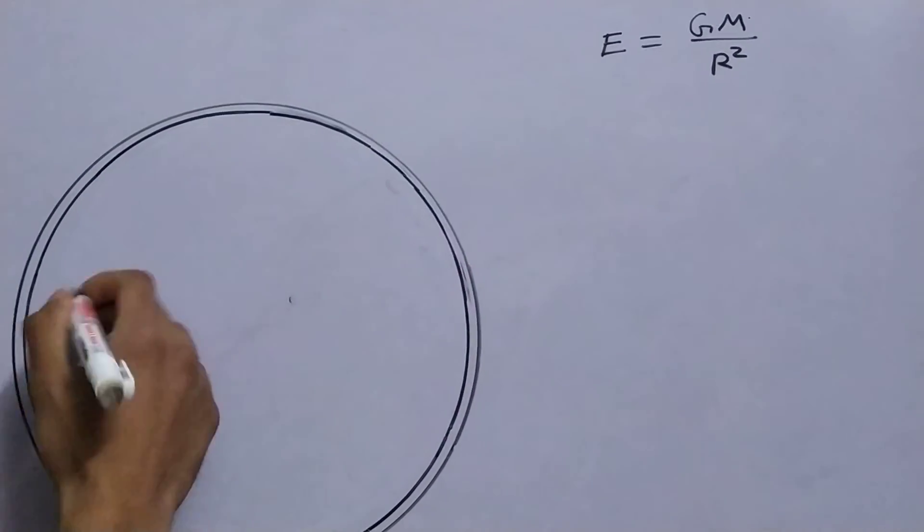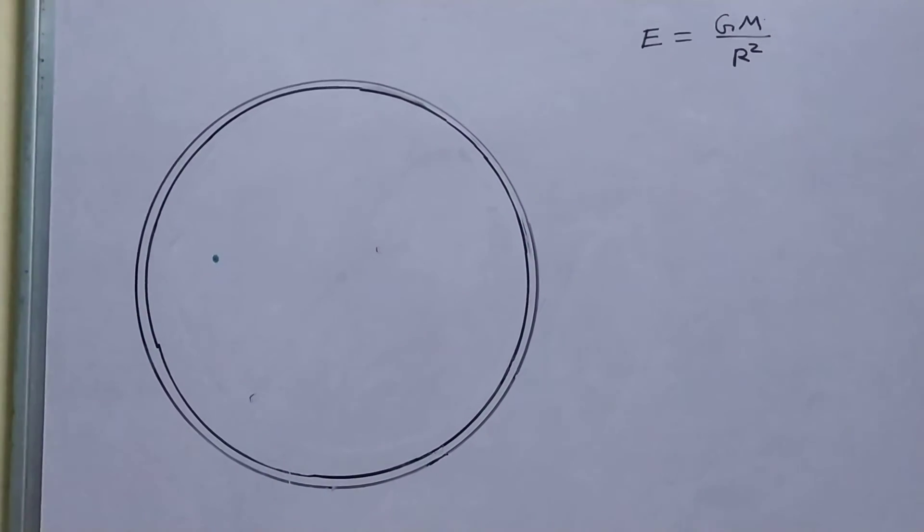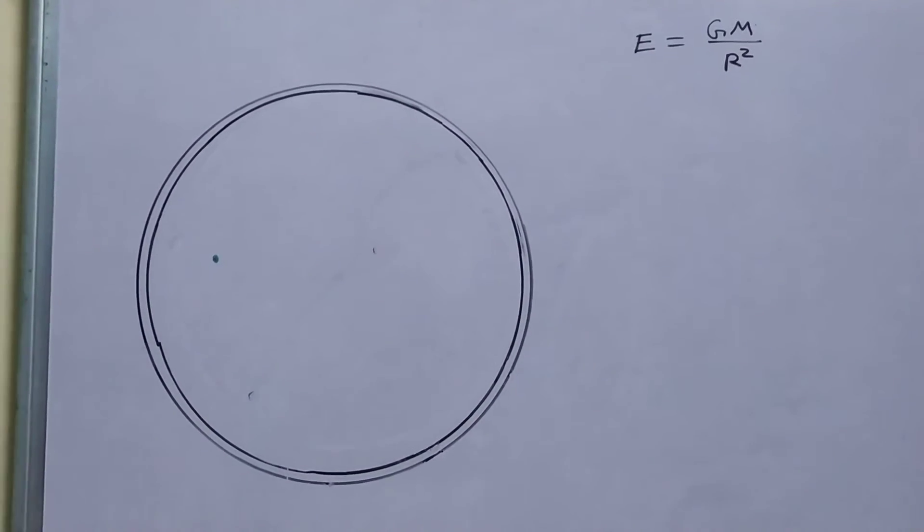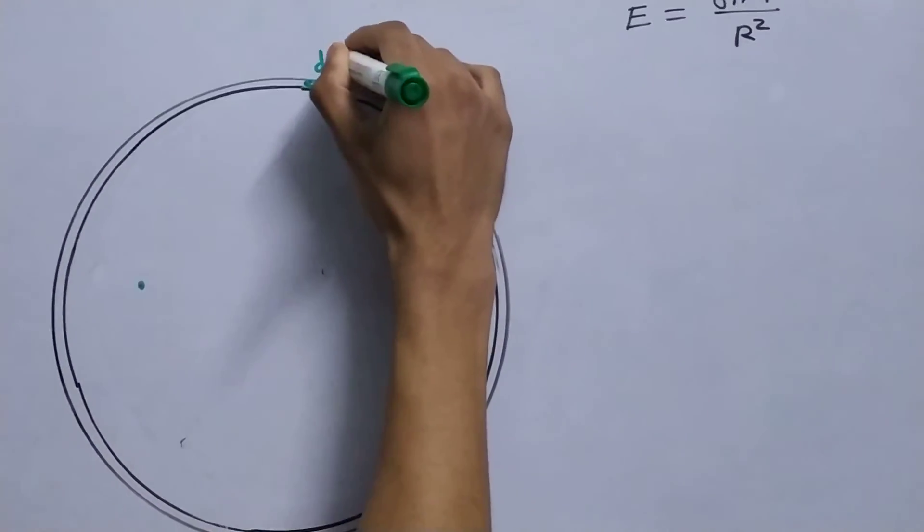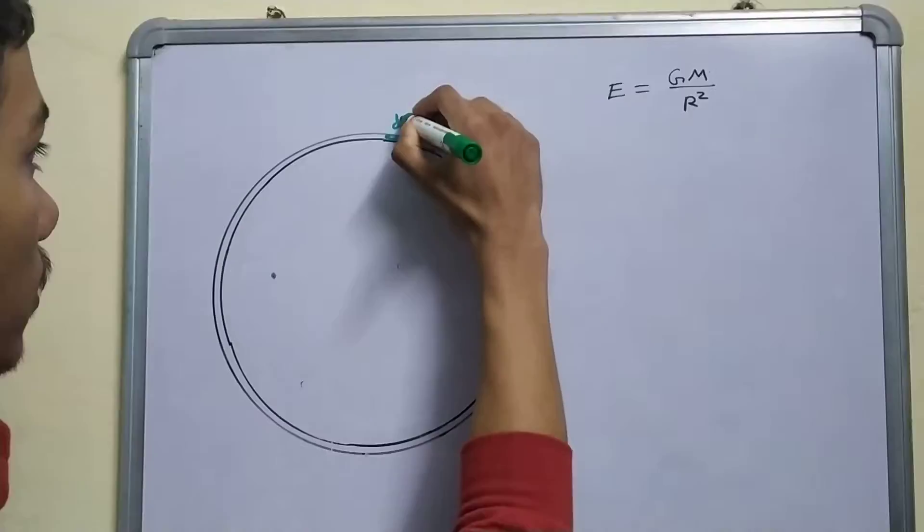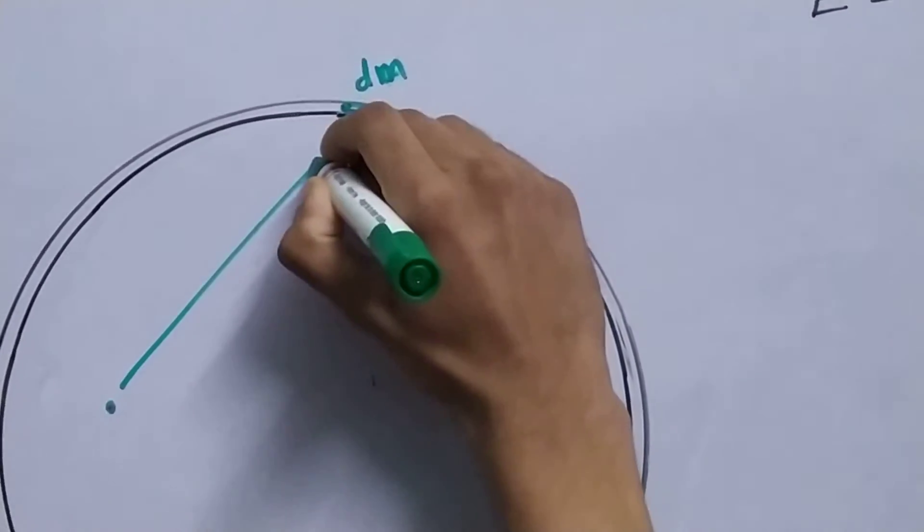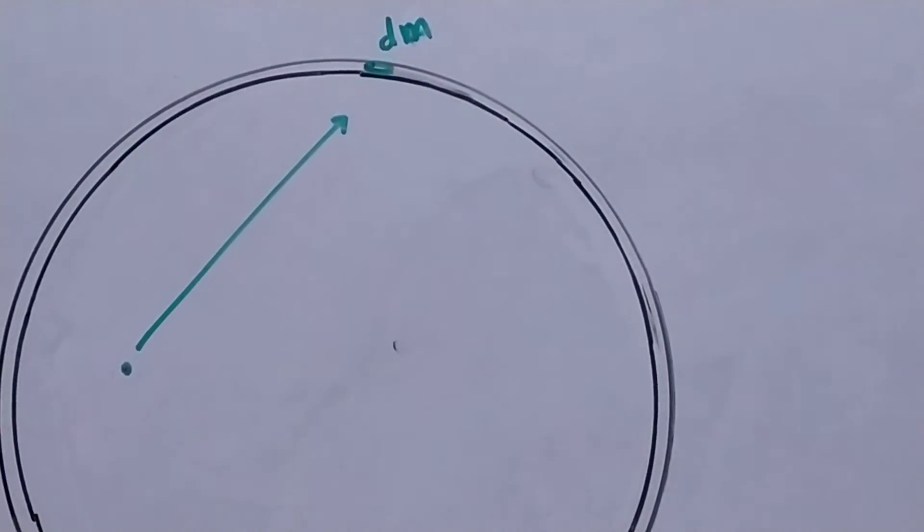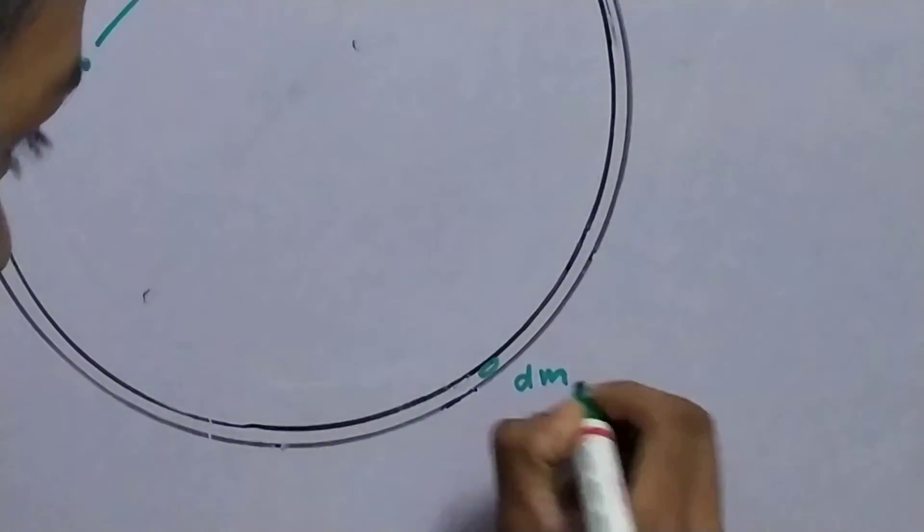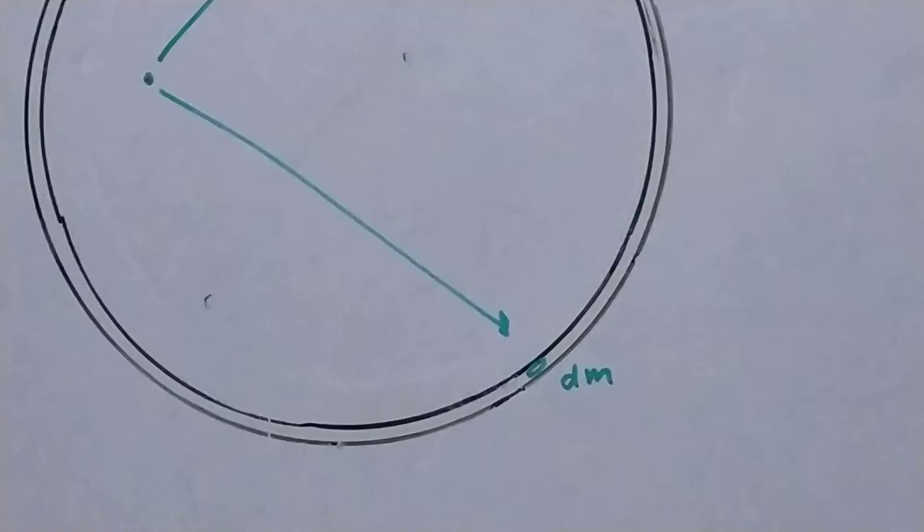First let's see what is actually creating the field at this point. It is actually these small mass elements like this dm right here. It's pulling, it's creating a field in this direction. You have right here, you have another mass which is creating a field in this direction.